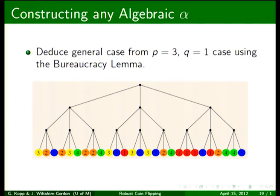Once we've completed the case where there are three sources and one is faulty, we bootstrap up to the general case using something called the bureaucracy lemma. The bureaucracy lemma just says that if you have ternary majority gates, you can actually build any majority gate. And the proof is the probabilistic method. So this is an example circuit with five inputs, and it should return true if any three of the inputs are true.